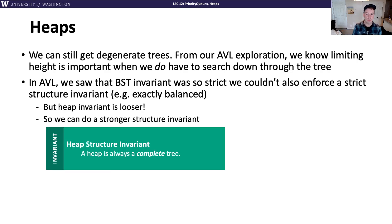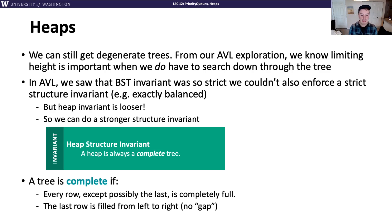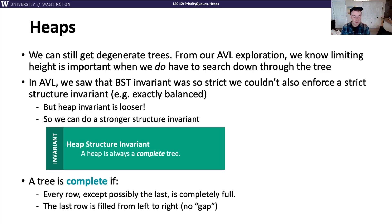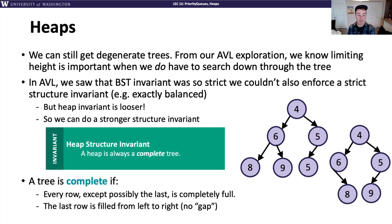We introduce the heap structure invariant: a heap must always be a complete tree. A tree is complete if every single row is completely full — no nulls — except the last row. The last row is allowed to have nulls, but they must be filled from left to right. So every row is full except the last, where all non-null nodes are on the left.